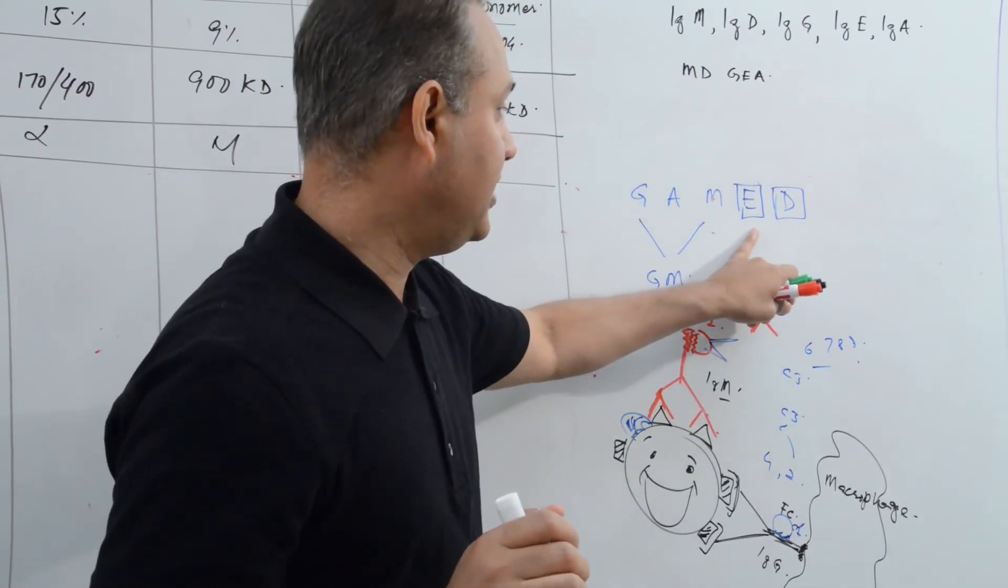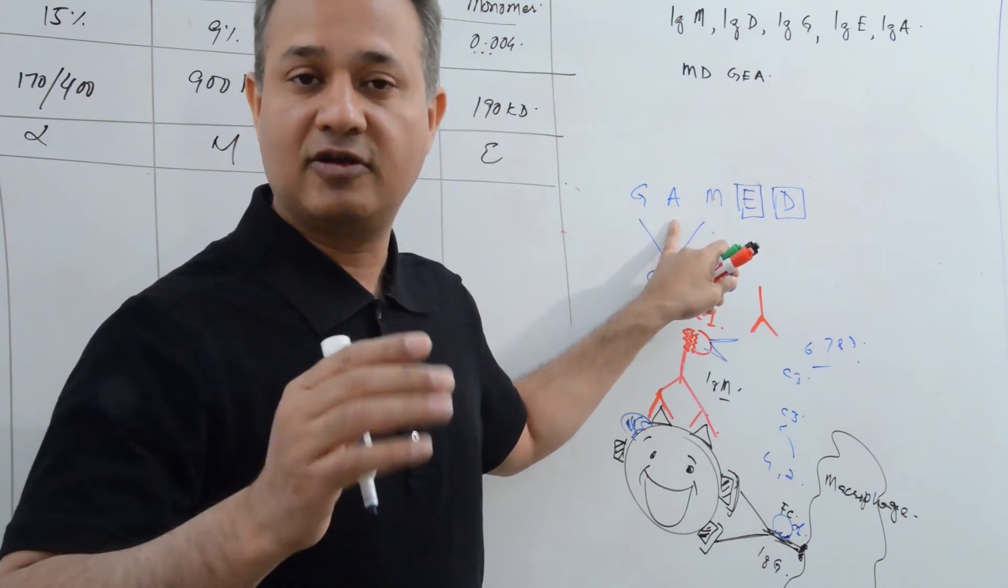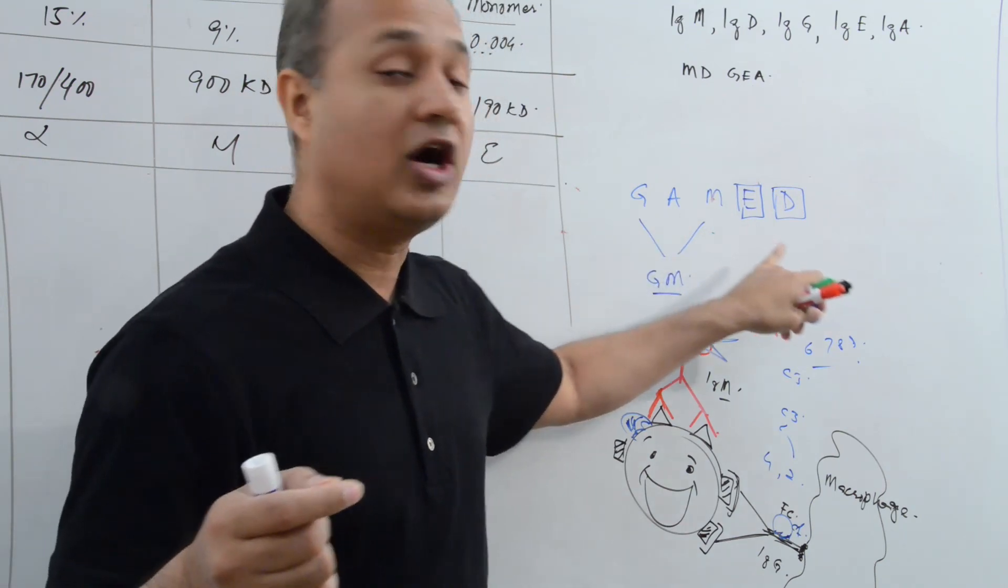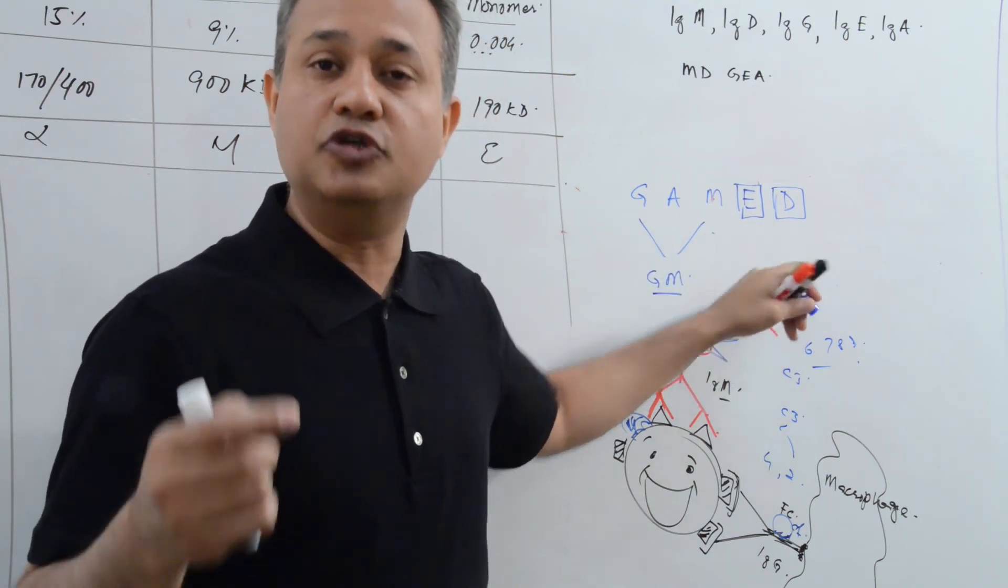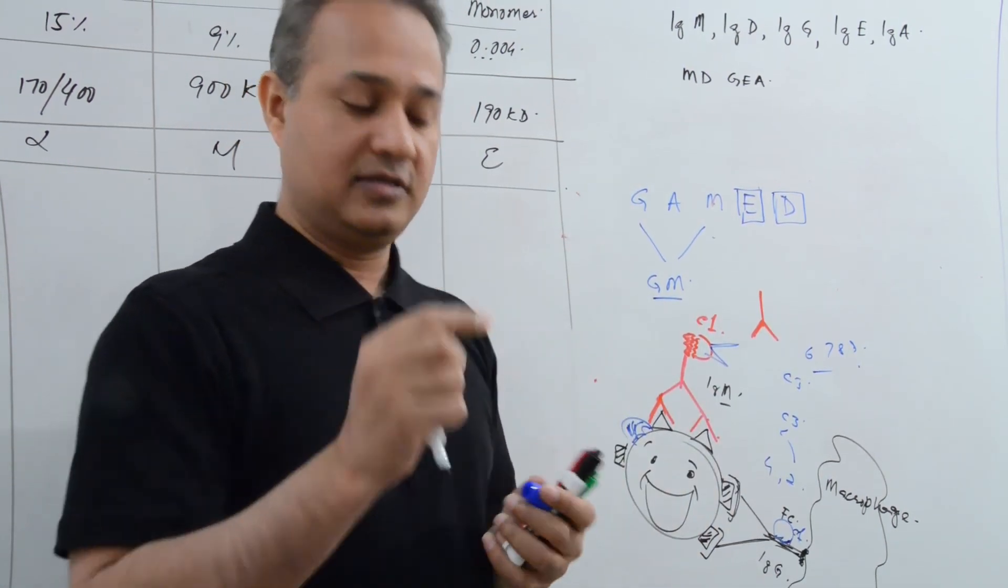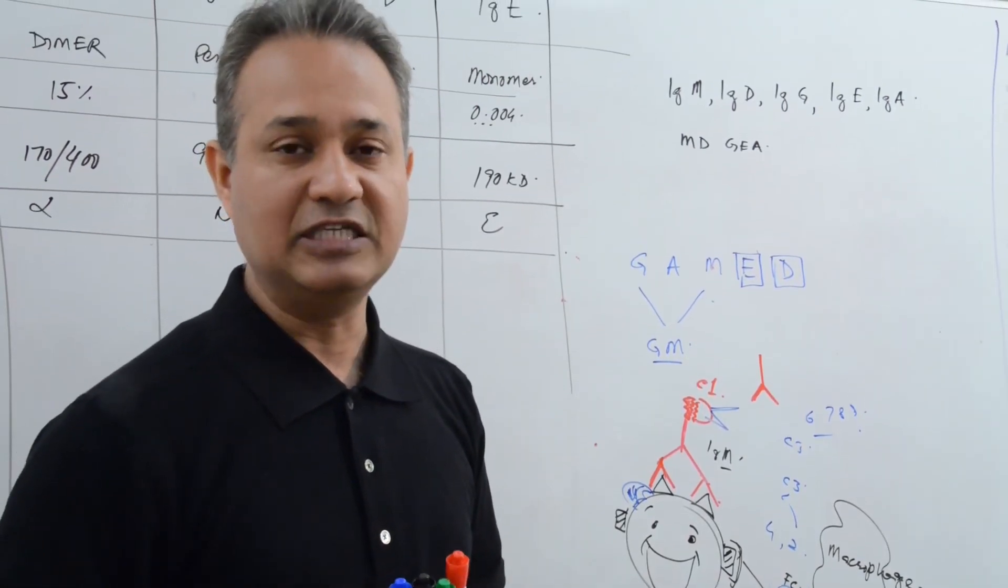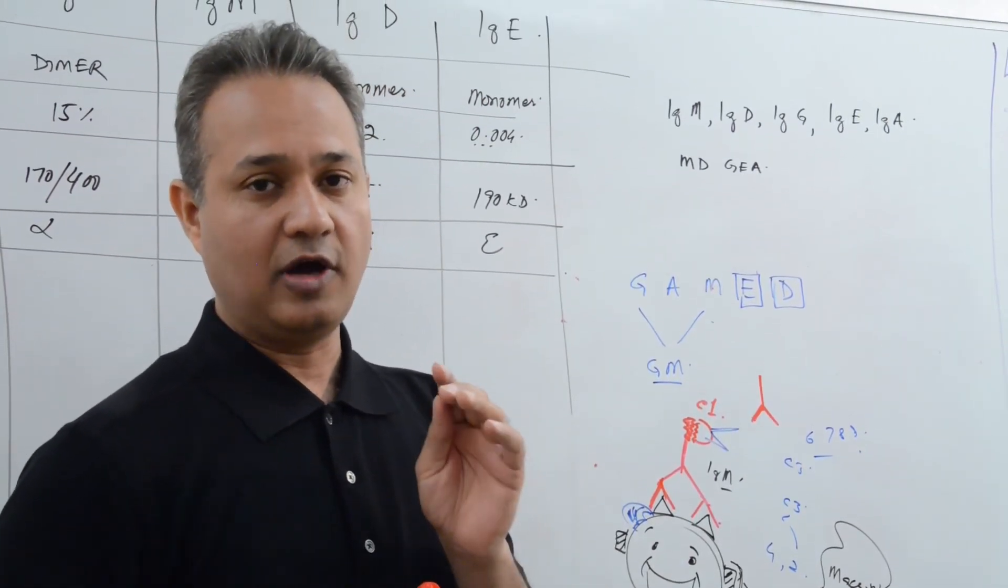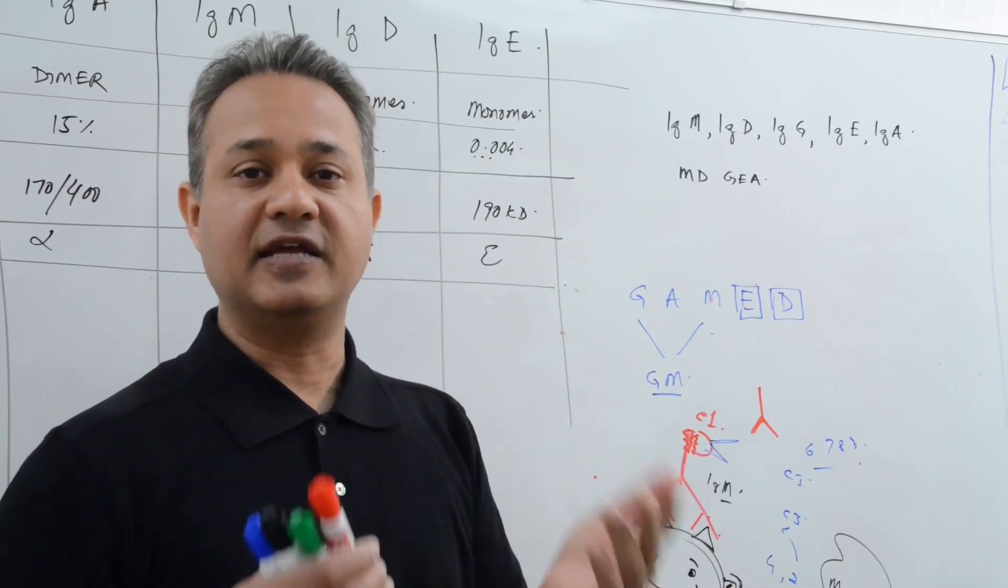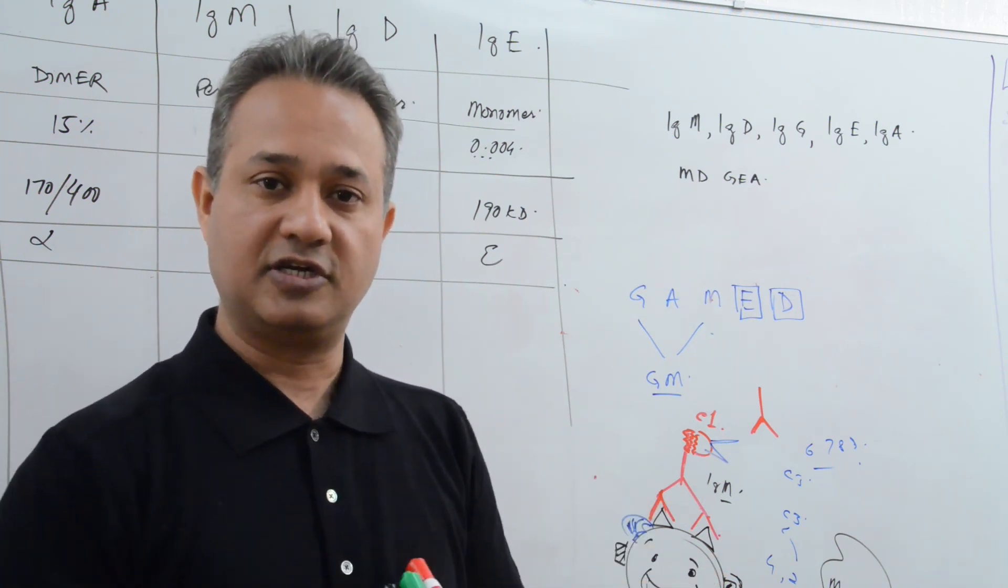D, E, A do not opsonize. A, that also means they do not opsonize directly or indirectly. That means they do not activate complement and they do not directly create opsonization with the macrophages. Only one immunoglobulin, IgG, is direct opsonizer. Only one, then two which are indirect: G and M. So we'll stop here and we'll continue with our structure. Thank you.